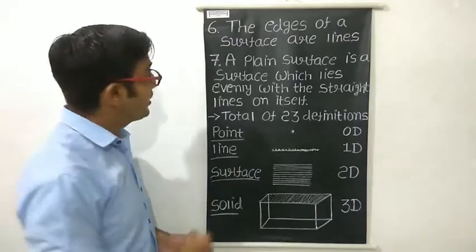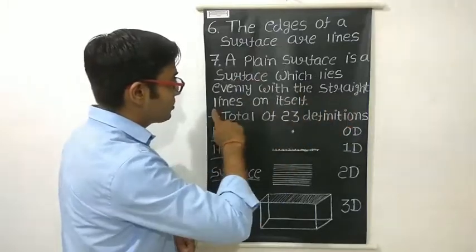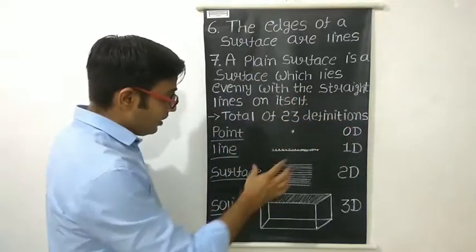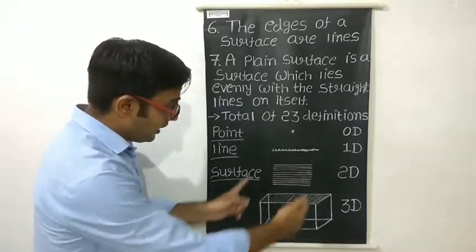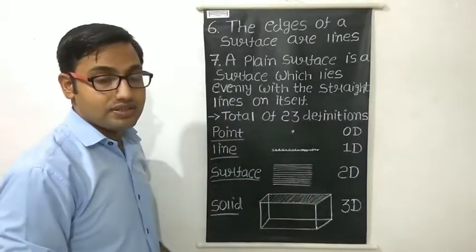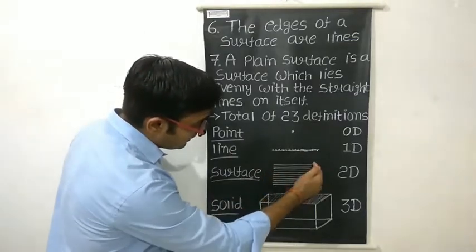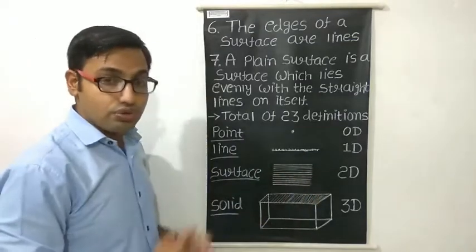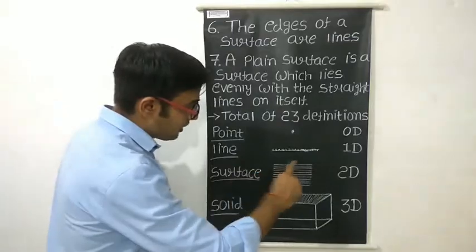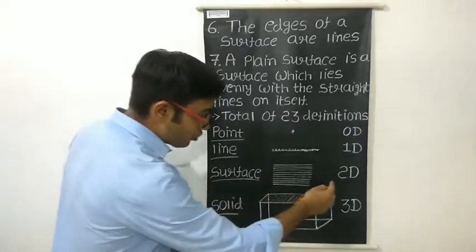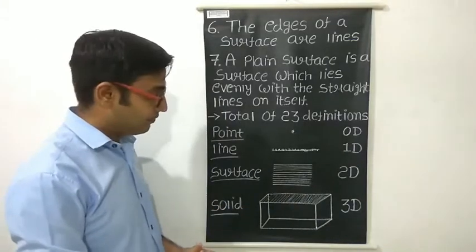Now, what is a surface? A plain surface is a surface which lies evenly with the straight lines on itself. If we put lines one after another, it becomes a surface. As the line has only one dimension, by stacking lines a second dimension is generated. That is why a surface has two dimensions — length and breadth — making it a two-dimension figure.